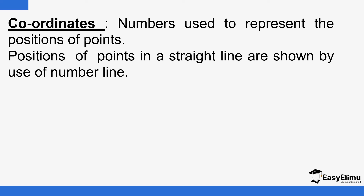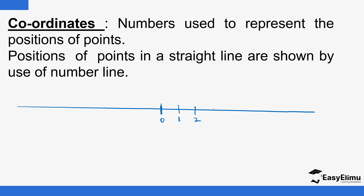We've looked at the number line in one of our previous lessons. We have zero at the center. As we move to the right, we have one, two, three, four, five, six, seven, eight — and this is endless. We also have negative one, negative two, negative three, negative four, negative five, and this is endless. It goes up to negative infinity and positive infinity.